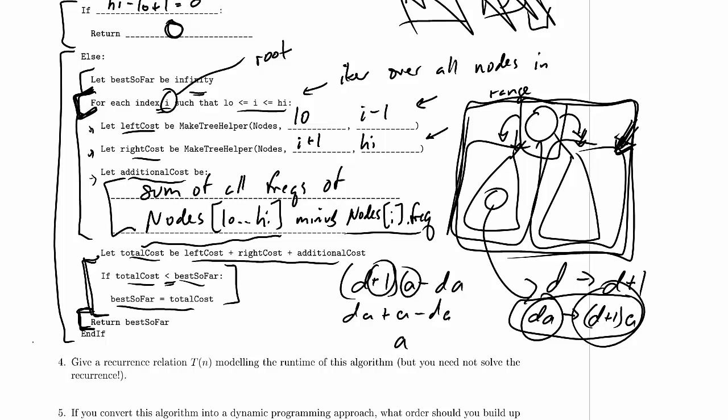Welcome to Computer Science 320 2014 Winter 2 Midterm 2 Practice Problem Screencast number 6.4. We are working on this problem right here. Give a recurrence relation t of n modeling the runtime of this algorithm. That's the algorithm that we just worked with up above, but we don't need to solve the recurrence.